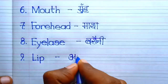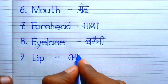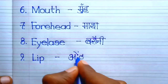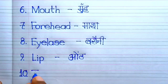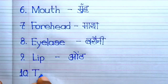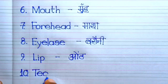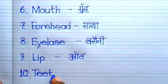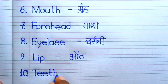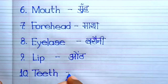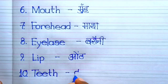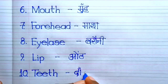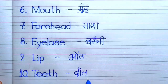Number 9. Lip — Lip means coat. Number 10. Chin — Chin means dark.